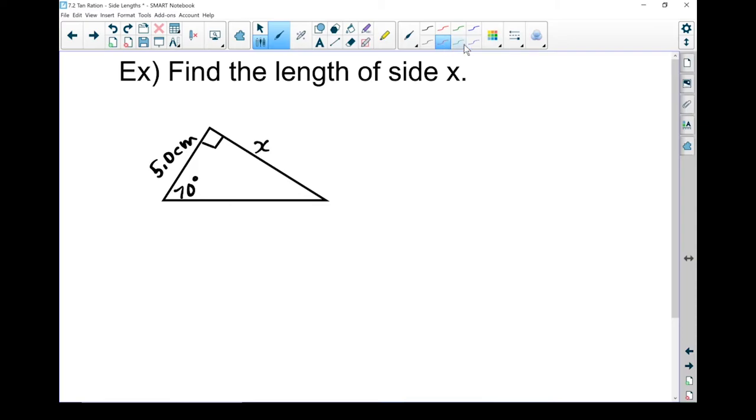So your first step should always be label the sides. As I label my sides, I am looking from that angle. So this x must be my opposite side. This 5 centimeter piece is right beside my angle. That must be my adjacent. This side that the right angle points at, that's my hypotenuse. Now we don't need a hypotenuse in this question, but it's good to get into the habit of labeling it.